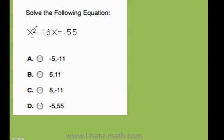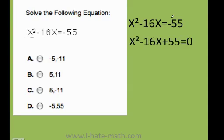So how do I solve this? The first step is to make sure that you always pass everything to the other side and make this equals to zero. So this negative 55 is going to go to the other side, but because it's negative, it passes to the other side positive.